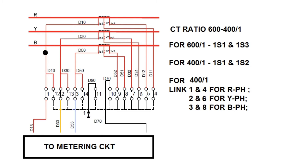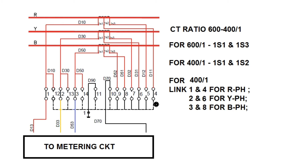Here the CT wiring connection for the metering core has been shown. The TB numbers are 1 through 14. These are the TB numbers taken for the metering core CT secondary circuit. All these TBs are disconnecting type TBs, so we can break the connection between two terminals.